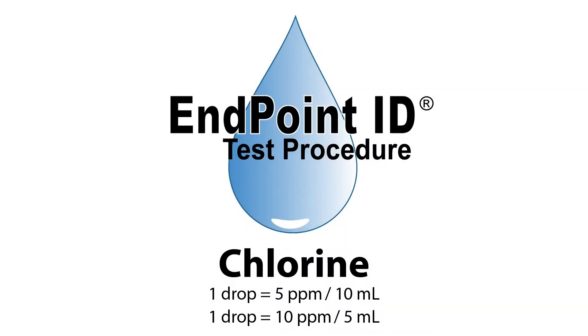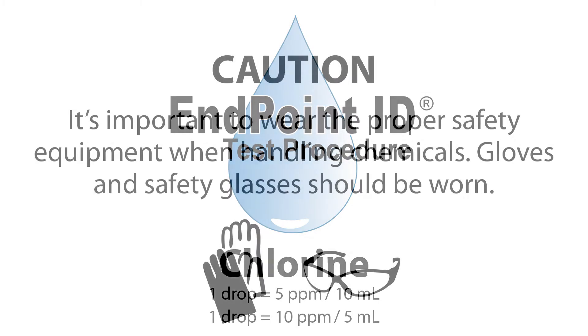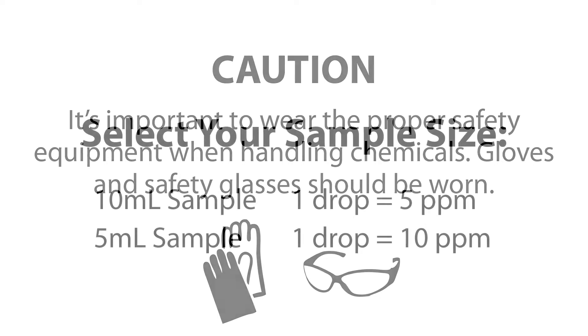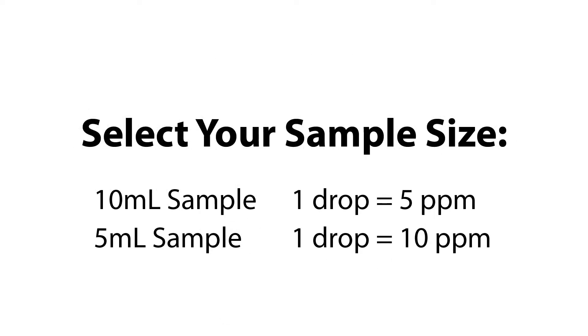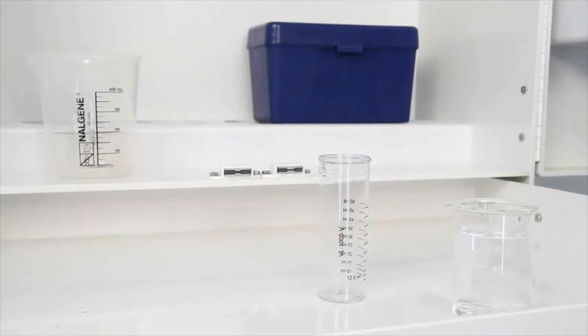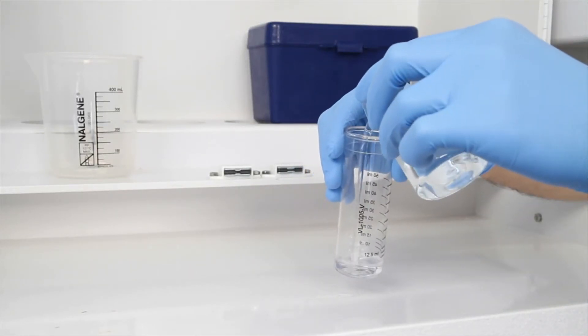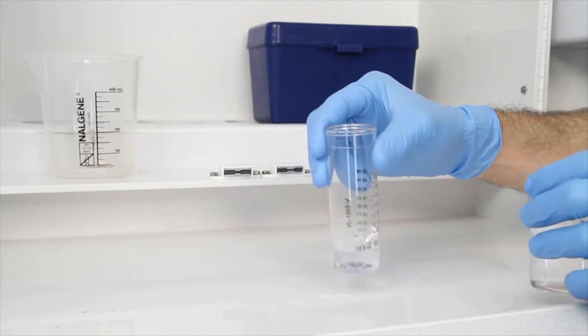This is a demonstration of the Chlorine Drop Count Test Kit using Endpoint ID procedures. The first step is to gather an accurate sample. The smallest change in sample size will lead to inaccurate results.